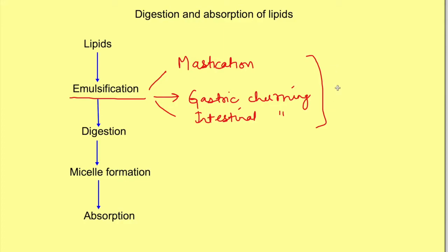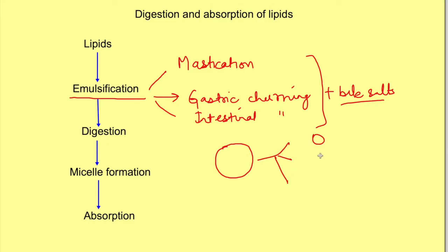That is done by bile salts, which are released from the liver. Once the larger globule is broken down into smaller particles, bile salts attach to the surface of these smaller globules. Bile salts have two ends: one is hydrophilic, which remains towards the water side, and one is lipophilic, which attaches to the surface of the lipids. This keeps the smaller particles away from each other, making bile salts essential for emulsification and speedy digestion of lipids.